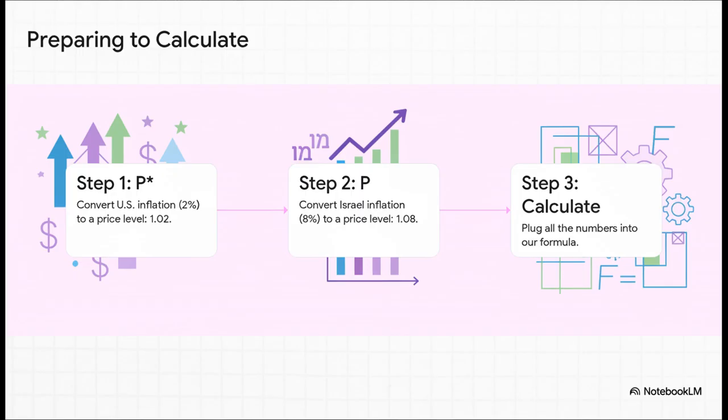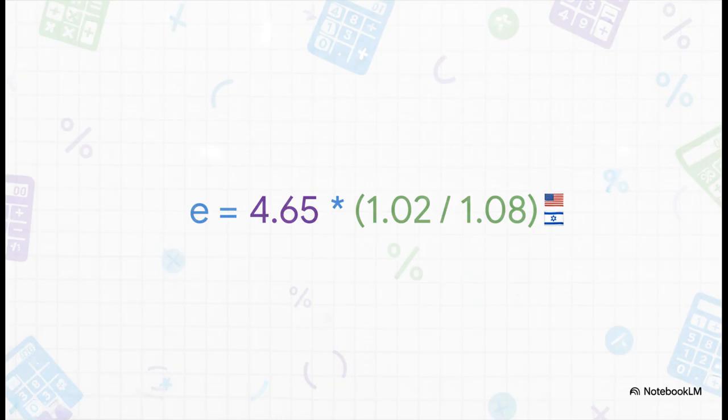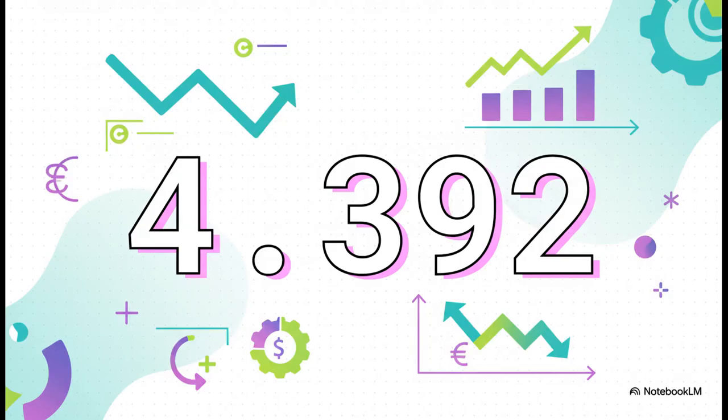Now we're ready to plug these in. We take our nominal rate, 4.65, and we multiply it by that ratio of price levels — 1.02 divided by 1.08. You can already see the number inside the parentheses is going to be less than 1. And there it is: 4.392. Just look at that for a second. We started with a nominal rate of 4.65, but the real rate — the actual purchasing power — was all the way down at 4.392.